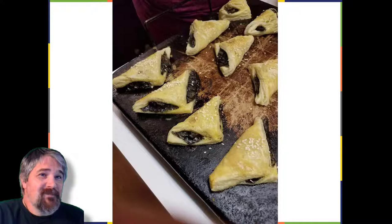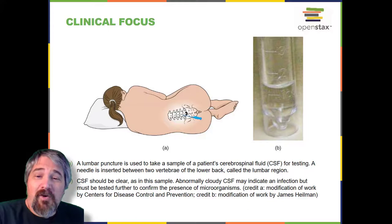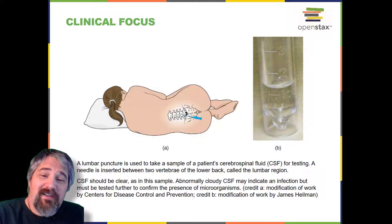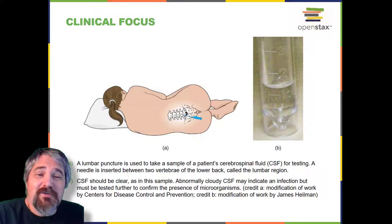Clinical focus, part one. Cora, a 41-year-old lawyer and mother of two, has recently been experiencing severe headaches, a high fever, and a stiff neck. Her husband reports that Cora also seems confused at times and unusually drowsy. Based on these symptoms, the doctor suspects that Cora may have meningitis, a potentially life-threatening infection of the tissue that surrounds the brain and spinal cord. Meningitis has several potential causes — it can be brought on by bacteria, fungi, viruses, or even a reaction to medication or exposure to heavy metals.